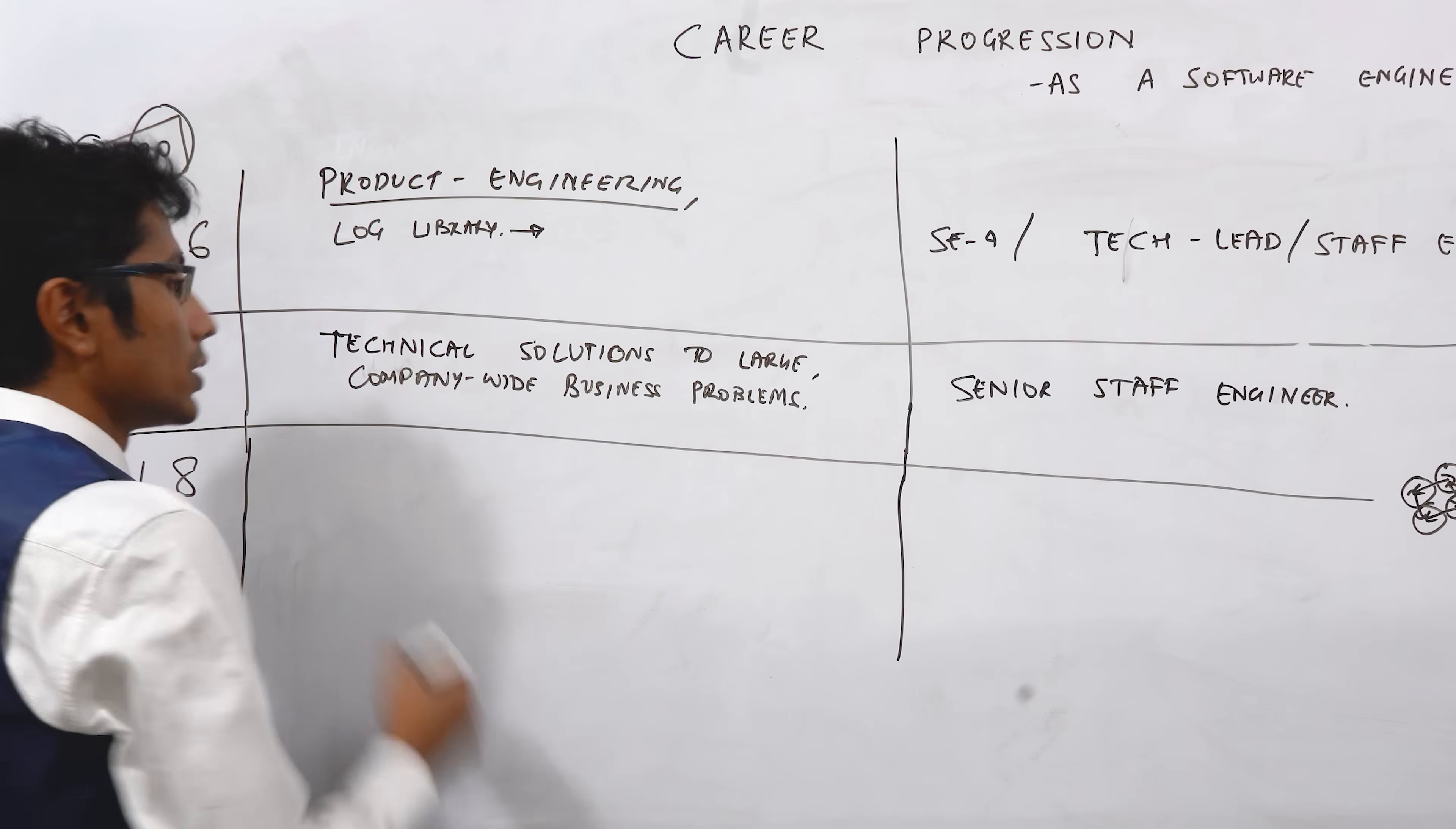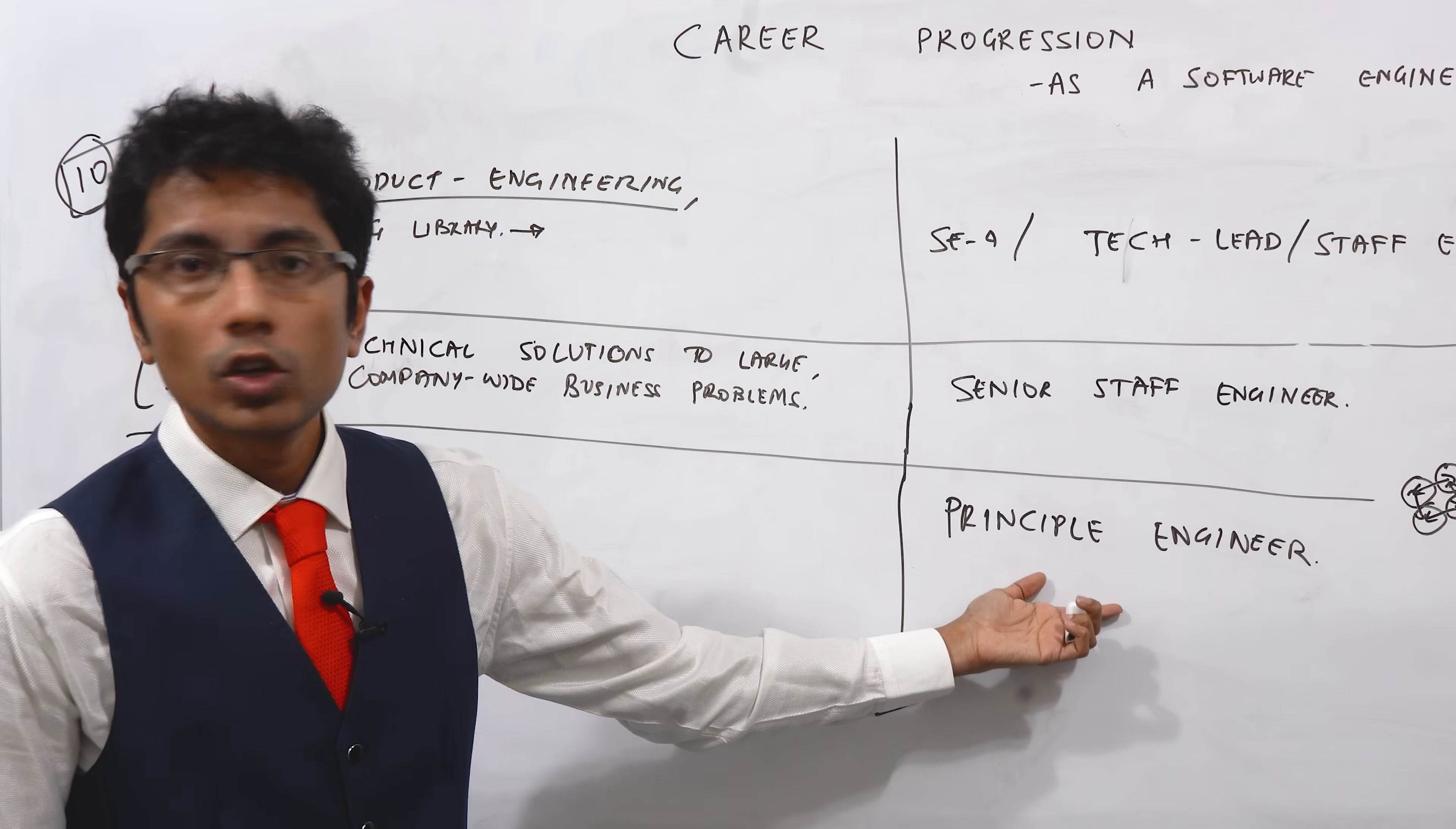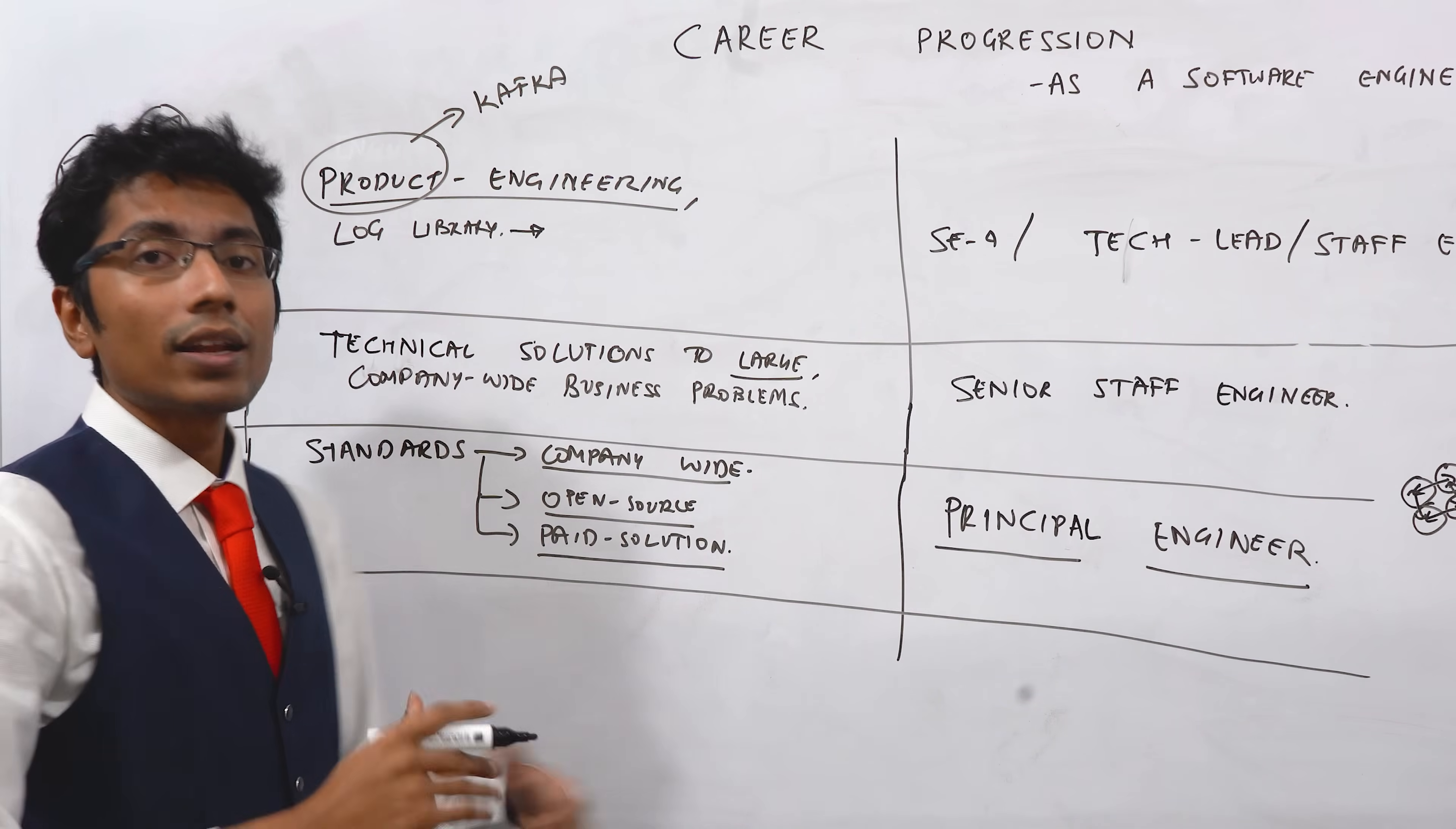Let's go for L8. This is very senior, called principal engineer. L8 folks don't have the standard interview rounds that software engineers have. It's not like a DSA question will be asked to you. It doesn't make sense. Often what happens with L8 engineers, principal level engineers, is there are interviews, but there's a lot of background checking. What have you done to deserve this position? The standards that you set are company-wide and sometimes it's not just company-wide. You can make it open source or you can make it a paid solution.